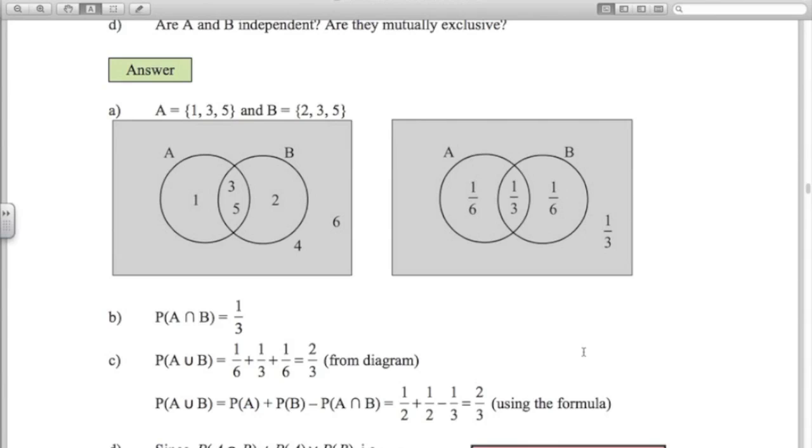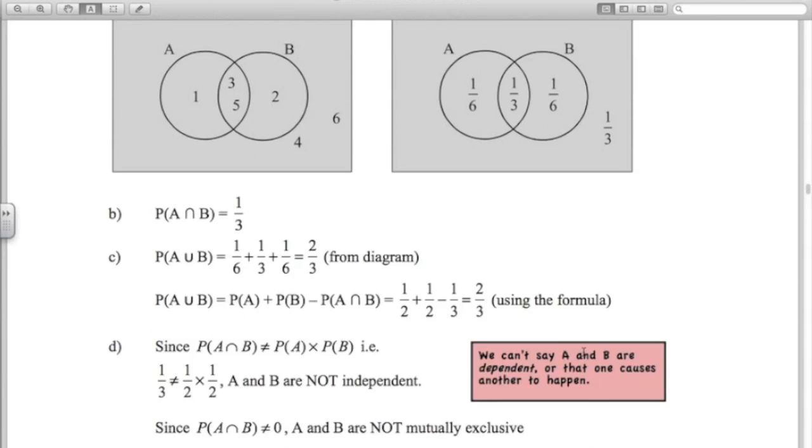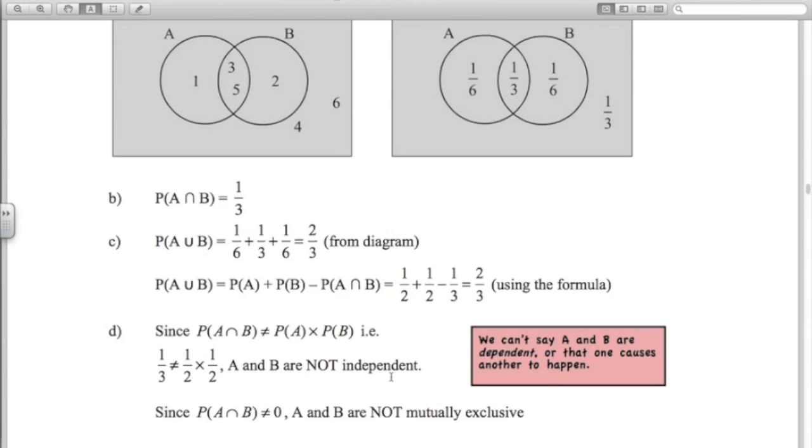Are they independent? There's only one way to try, or to tell. The probability of A intersection B we've worked out, that's 1 third. The probability of A is 1 half, the probability of B is 1 half. Put that in the formula. Since 1 third is not 1 half times 1 half, 1 half times 1 half is 1 quarter. A and B are not independent. Are they mutually exclusive? Well, the intersection is clearly not 0. The intersection is 1 third so they are not mutually exclusive.